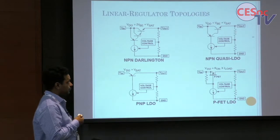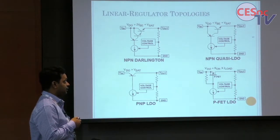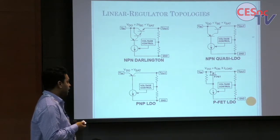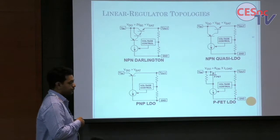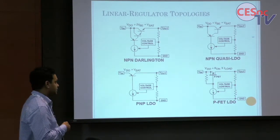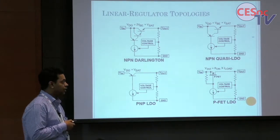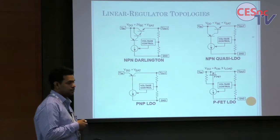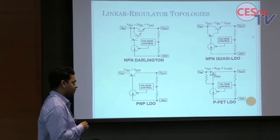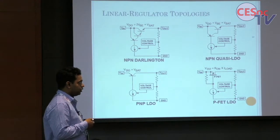Second is the quasi LDO, where one transistor has been removed. This is better than NPN Darlington because dropout is lesser, but bias current will again increase. Third is the PNP-based topology — here bias current will be maximum but it has minimum dropout voltage. The saturation voltage of the PNP transistor acts as the dropout voltage.